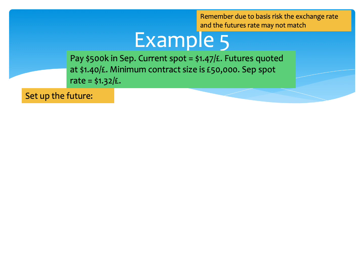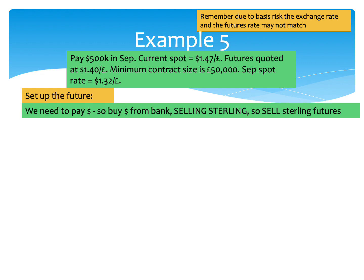The first thing we need to do is set the future up — so we need to decide if we need to sell or buy the sterling futures. Remember, you have to think about what you're doing with sterling in the underlying transaction. We need to pay $500,000 in the future, so we're going to be buying those dollars from the bank — essentially selling them sterling. So if the underlying transaction involves selling sterling, then we have to sell our sterling futures today to start the hedge off.